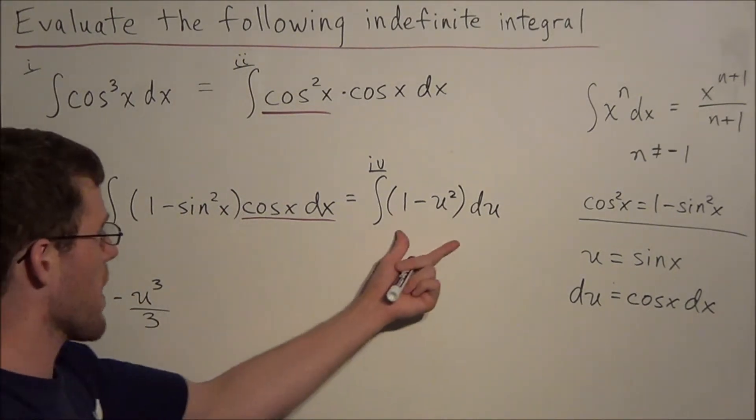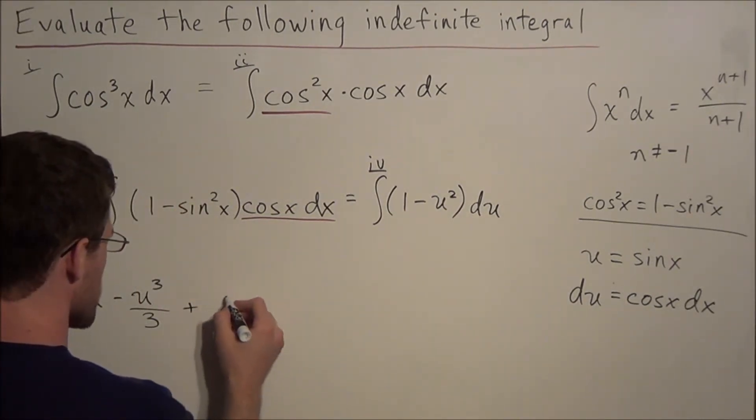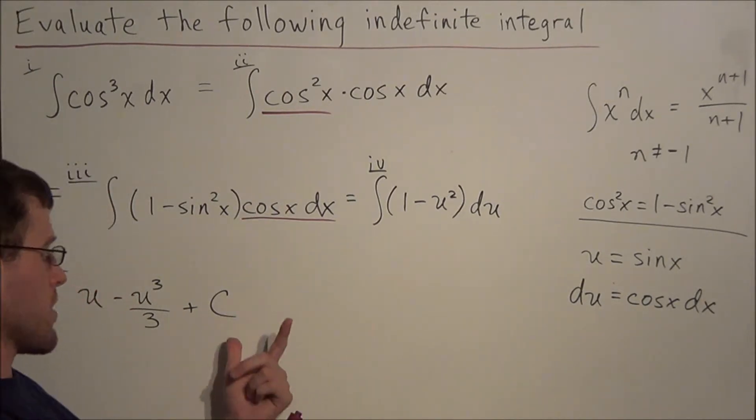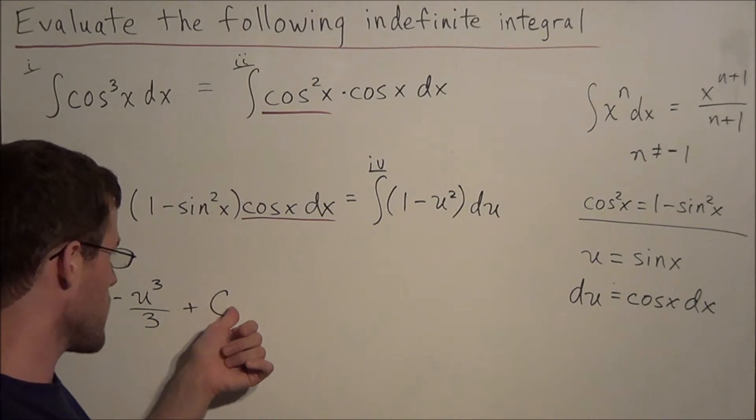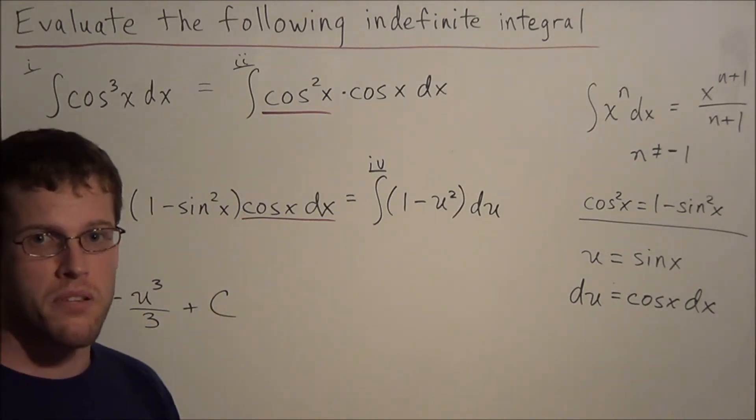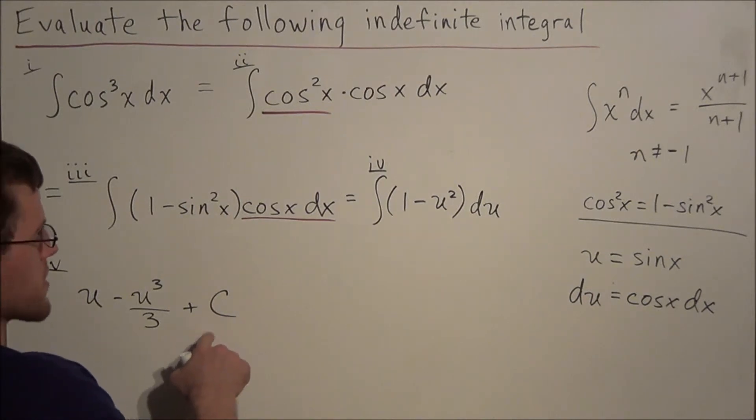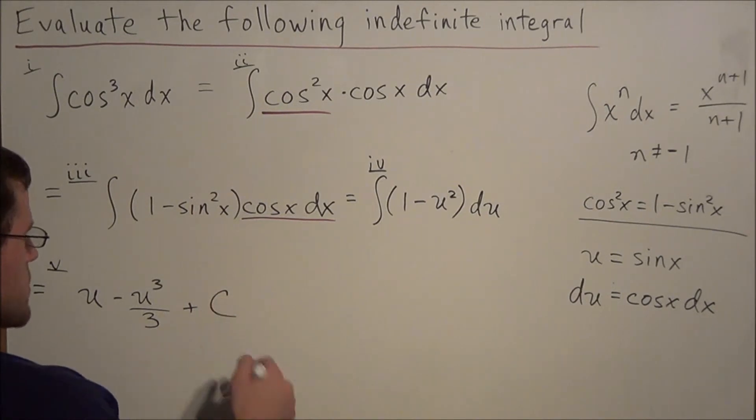And now remember, when we evaluate an indefinite integral, we always have to throw a constant term c on the end, because when we find the derivative of any function and there's a constant term, it always cancels out. So there could be a constant term, so we always write the plus c to indicate that. Trust me, you need to write this because you will definitely lose points. The professors love to zap points for not including the plus c.